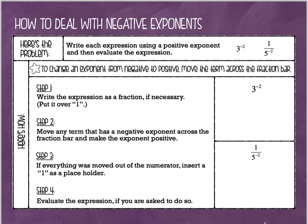Here's the problem: we are going to write each expression using a positive exponent and then evaluate the expression. What you want to remember is that you never ever want to have a negative exponent. In order to change them, it's as simple as moving the term across the fraction bar, and that will make sense as soon as I show you these examples.